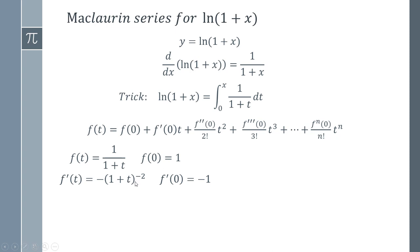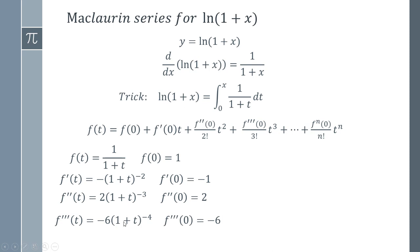Differentiating gives us +2(1+t)^(-3); evaluated at 0 that gives 2. Repeating: multiply by -3, subtract 1 from the power, evaluate at 0 gives -6. Then multiplying by -4 gives 24, subtracting 1 gives the power -5, and evaluating at 0 gives 24 — we're just left with the constant term out front.